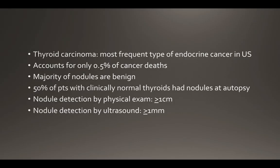So why is this important? Thyroid carcinoma is the most frequent type of endocrine cancer in the United States. However it only accounts for less than a percent of cancer deaths and the majority of nodules are benign. In one study 50% of patients with clinically normal thyroids had nodules at autopsy, and ultrasound can detect nodules as small as a millimeter. The prevalence of nodules in the general population is high, ultrasound is very effective at identifying them, but most are benign. So we want a methodology to help decide whether the patient can be monitored or whether they warrant further and immediate testing.